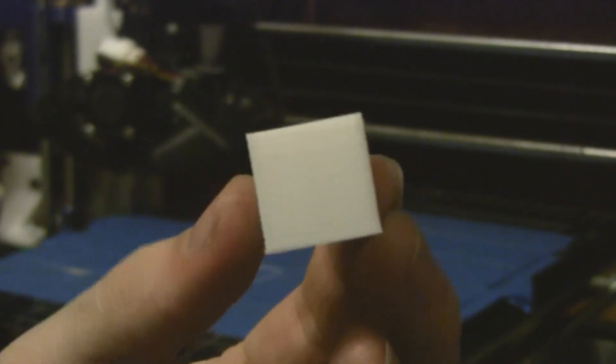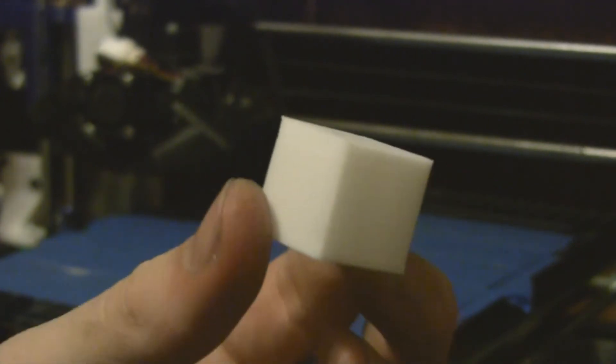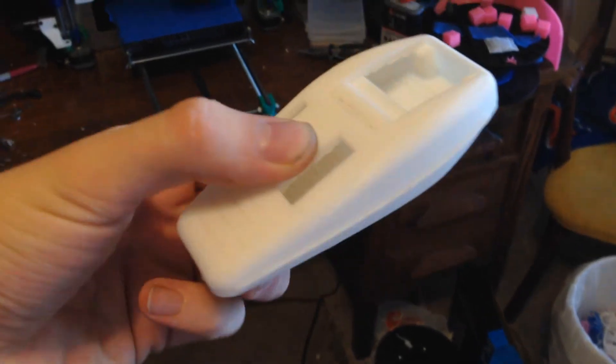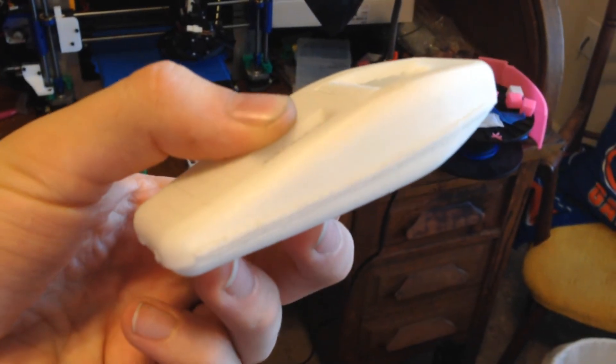Alrighty, the test cube came out awesome, but as a better example of what this printer can do, I printed off the front and back shell of the original series Star Trek phaser. Came out really awesome.